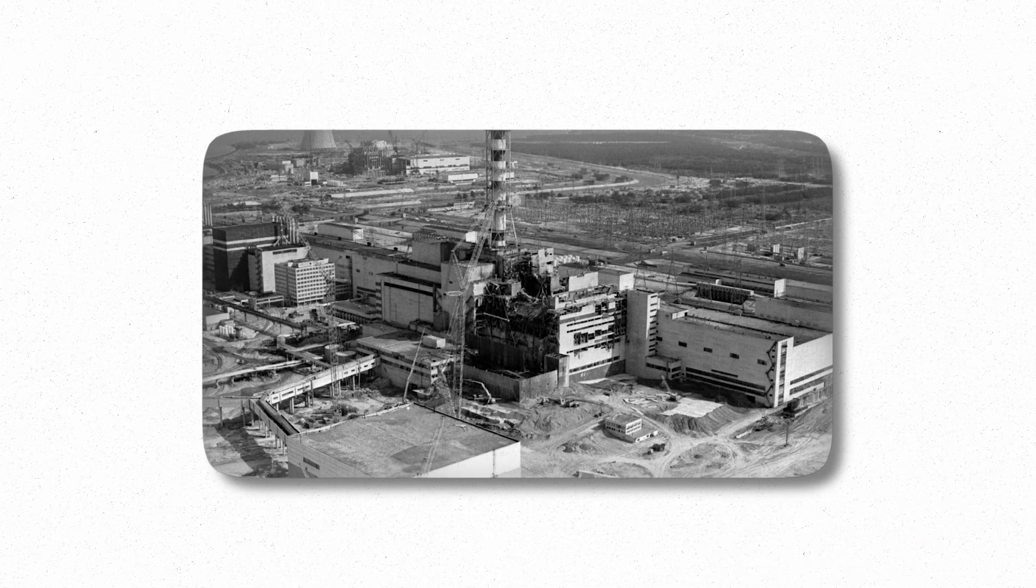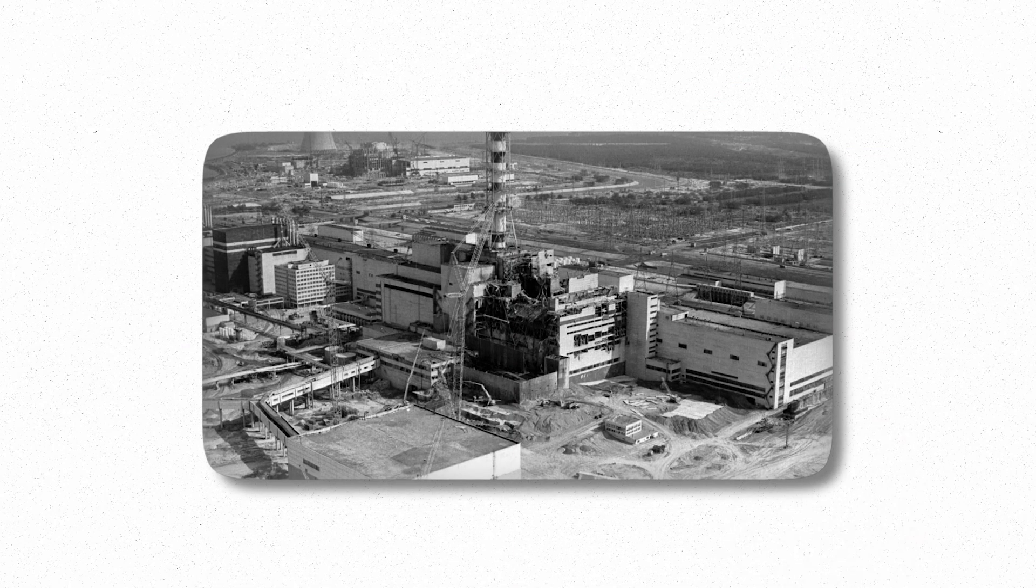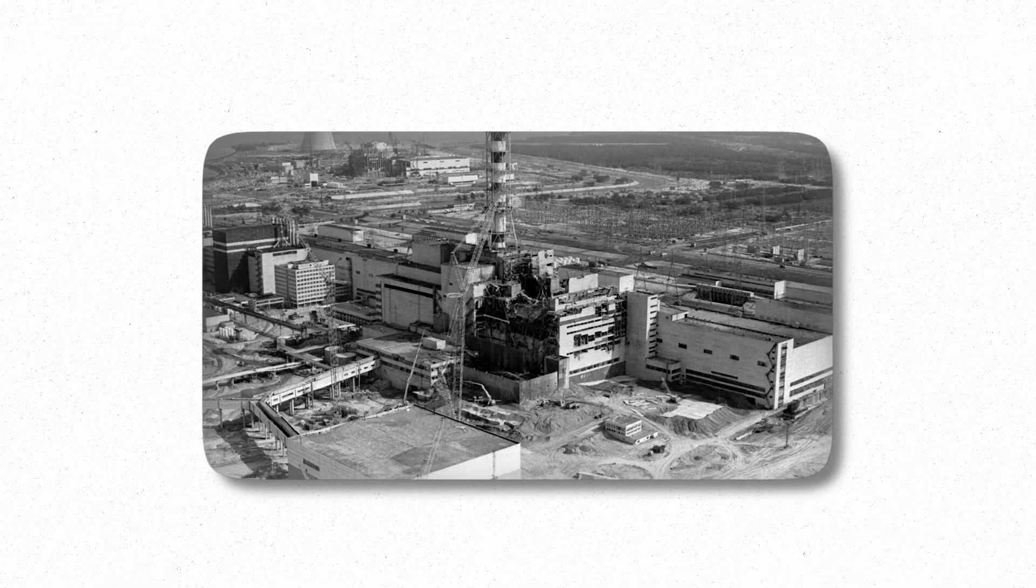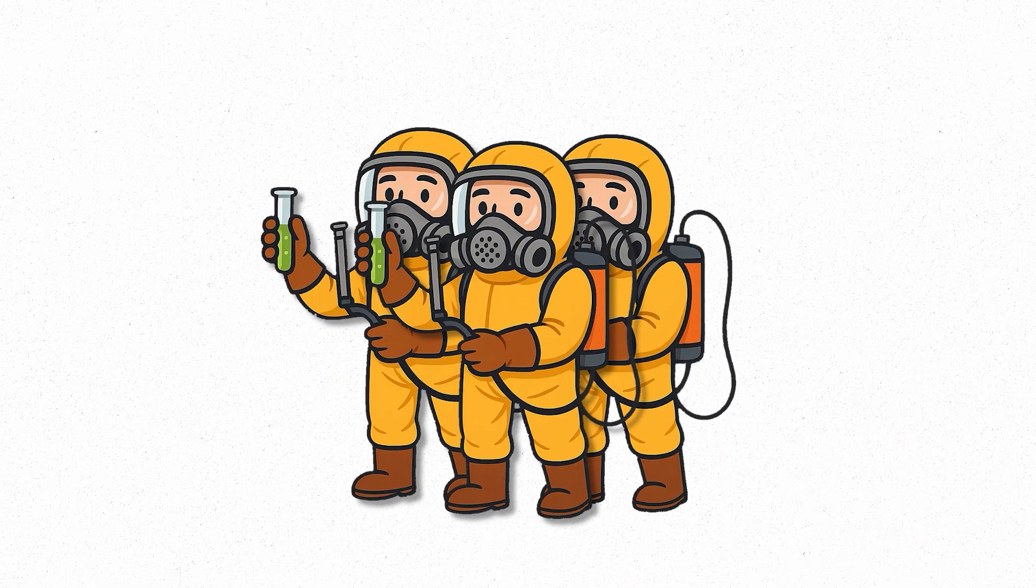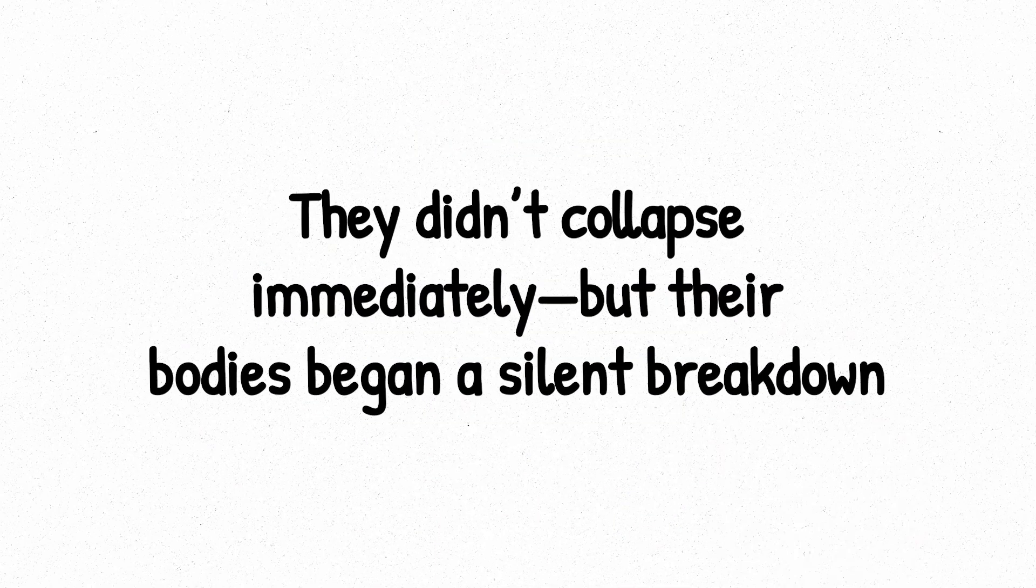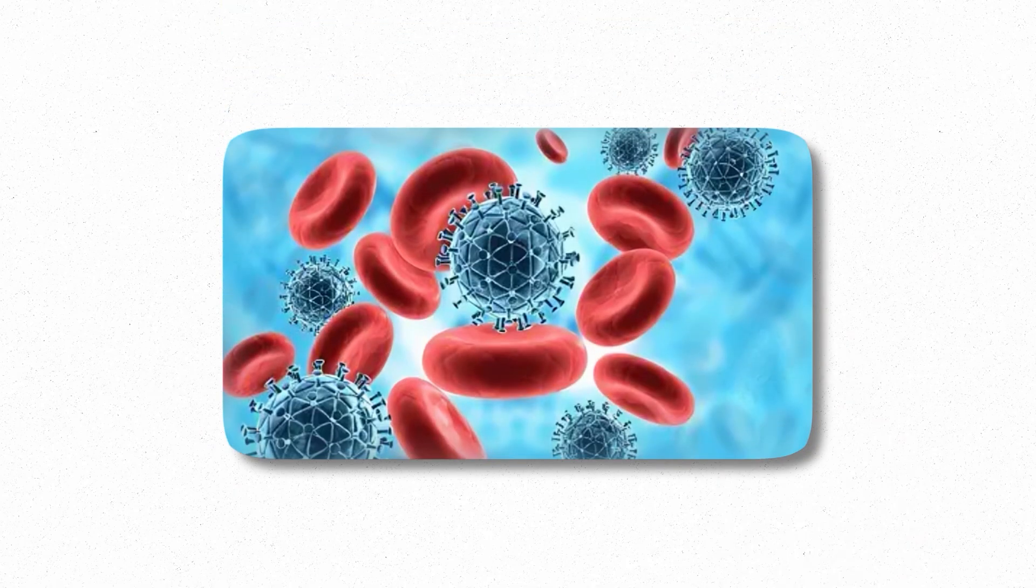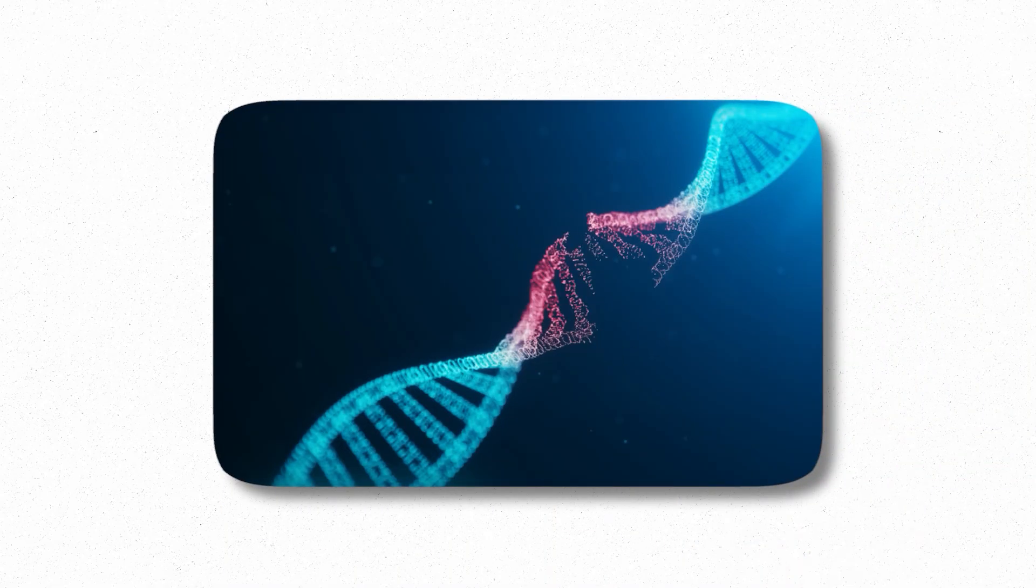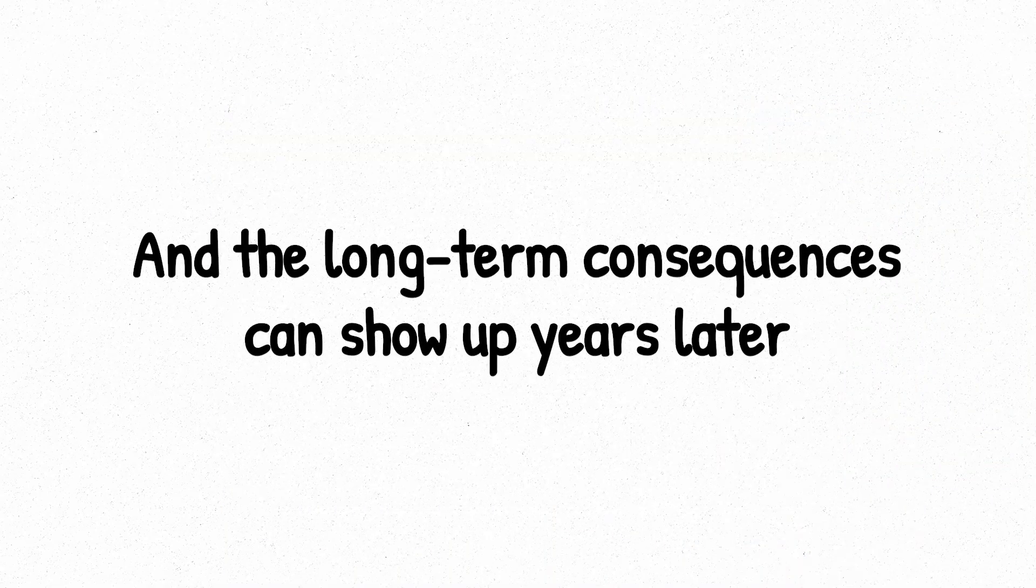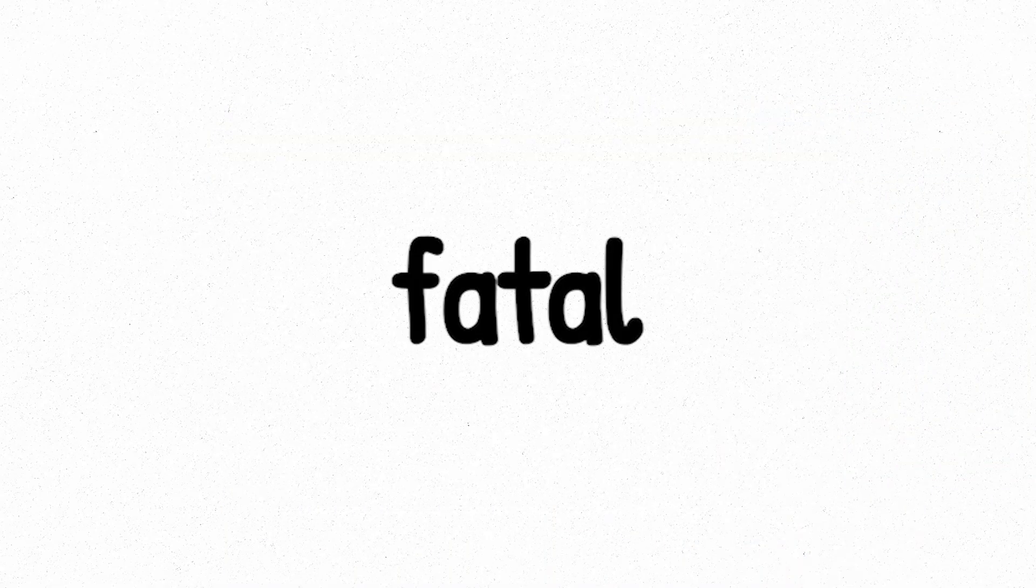Now imagine standing just outside the reactor at Chernobyl for a few minutes, during the first hour of the disaster. Some early workers received doses in this exact range. They didn't collapse immediately, but their bodies began a silent breakdown. The immune system weakens, the body repairs slower, DNA damage increases, and the long-term consequences can show up years later. This level isn't fatal, not yet, but it leaves a mark.